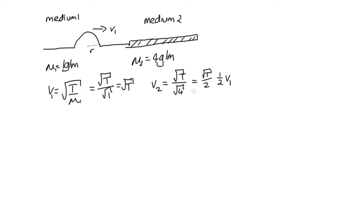So v₂ equals a half v₁, meaning it's going at half the speed in medium 2. We know that v equals f lambda. If the velocities change, then the wavelengths must change because the frequency is independent of the medium. So this tells us that the wavelength in the second medium is equal to a half the wavelength in the first medium.